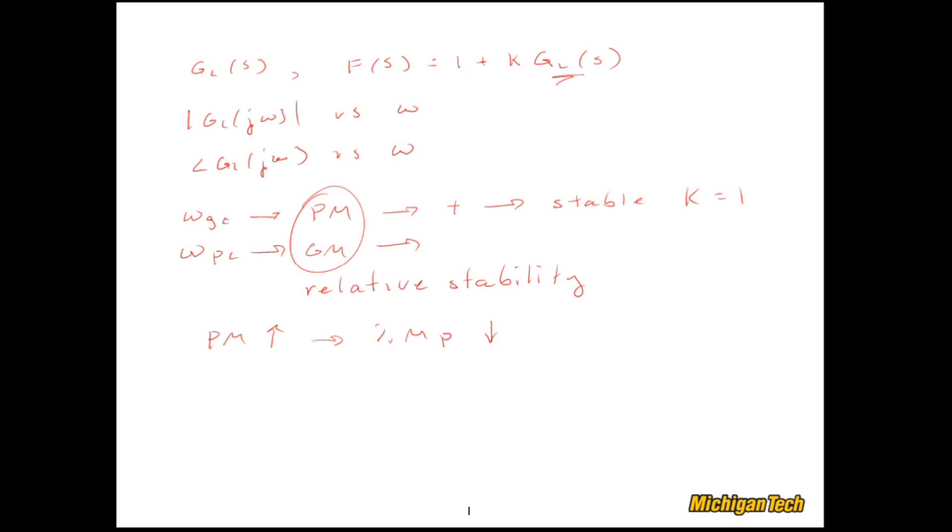We can also generate Bode plots of the closed loop transfer function. So let's say we had y over r, our closed loop transfer function, and we call that GCL. Then what often happens is the magnitude of the closed loop transfer function, if this is 0 dB, looks like this. It's 0 dB, maybe bumps up a little bit, and then rolls off. So what that tells you is that at low frequencies out here, your output is going to equal your input. So you're going to track that reference signal. If that reference signal was a sine wave of low frequency, then you would track it with 0 error.